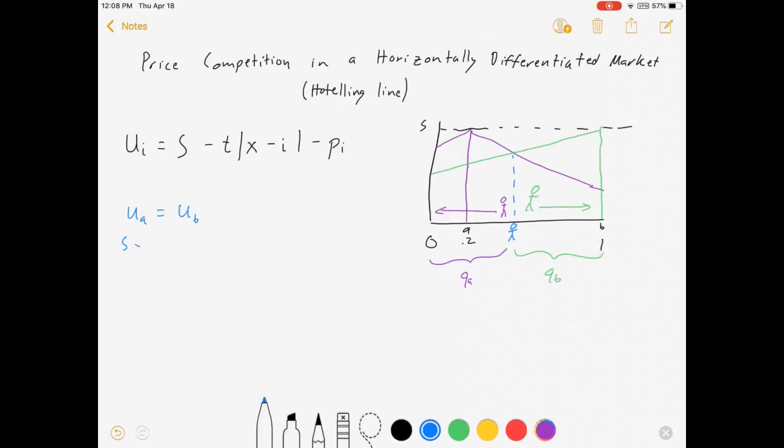I'm going to set utility from going to firm A equal to the utility for going to firm B. That's S minus T times, let's see, the blue person's address is X minus A, minus PA is equal to S minus T times B minus X minus PB. Now if you're wondering where the absolute values went, I just assumed that X was less than B and greater than A, because that's how I drew it. That the indifferent consumer would be somewhere between the two firms.